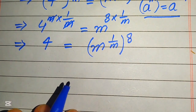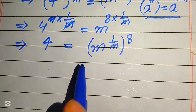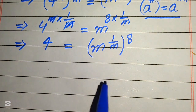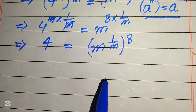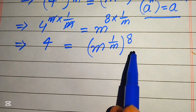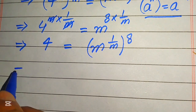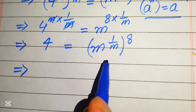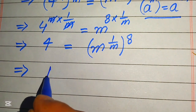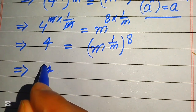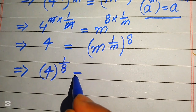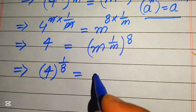Now we have the variable term on the right hand side. We move the constant 8 to the left hand side. To eliminate this 8 from the right hand side, we take the 8th root on both sides — in other words, we take 1 over 8 power on both sides.